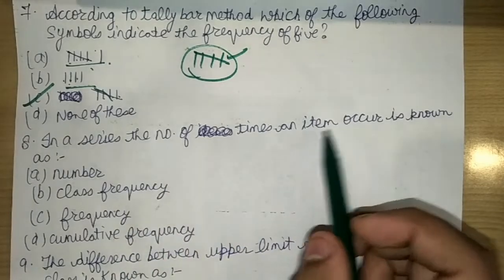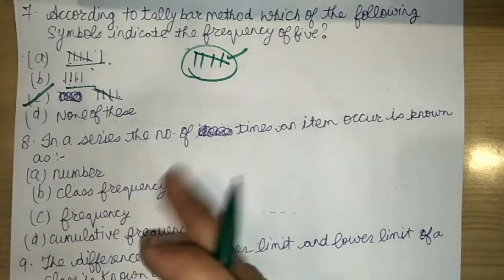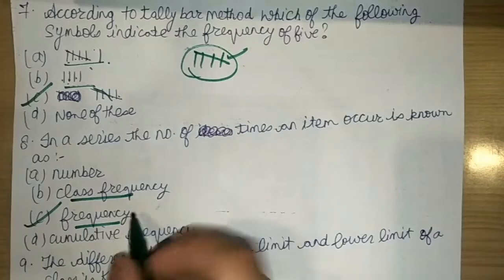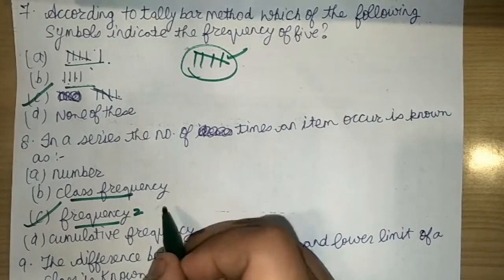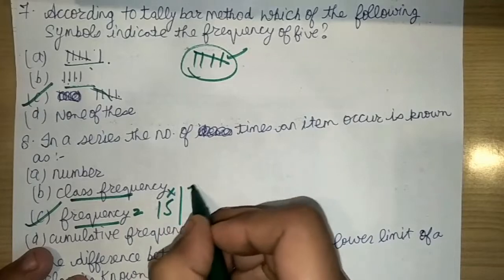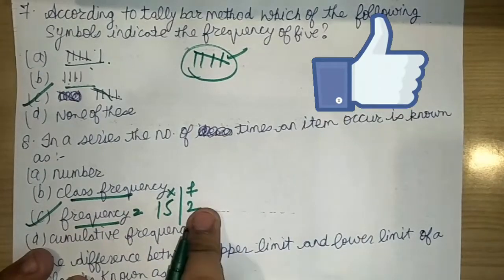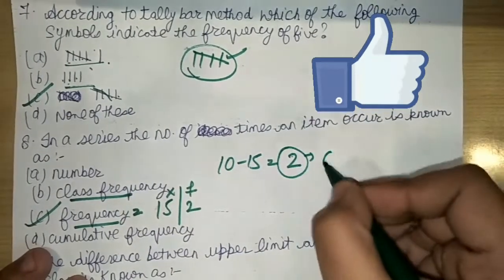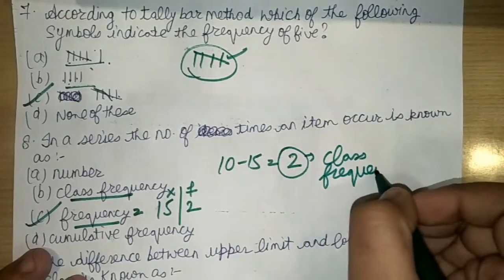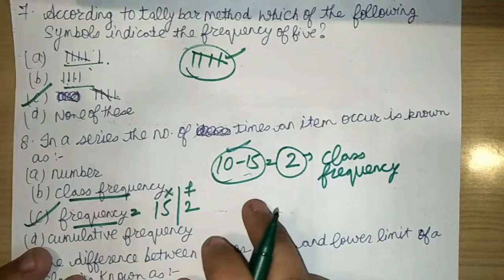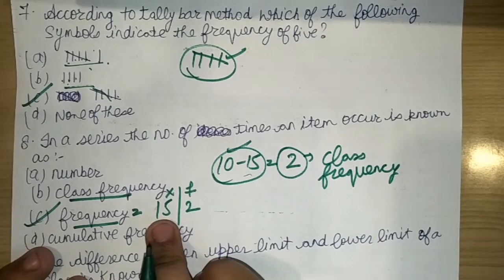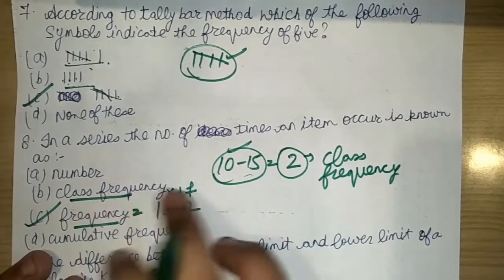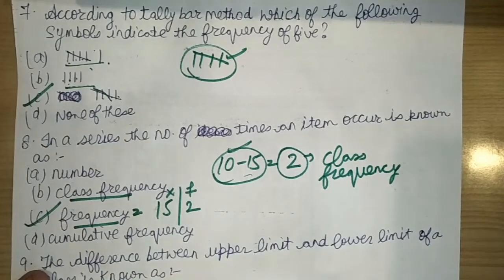The next question relates to: in a series, the number of times an item occurs is known as what? In a discrete series, this is called frequency. In a continuous series with class intervals, it is called class frequency. So class frequency is the answer for continuous series and frequency for discrete series.